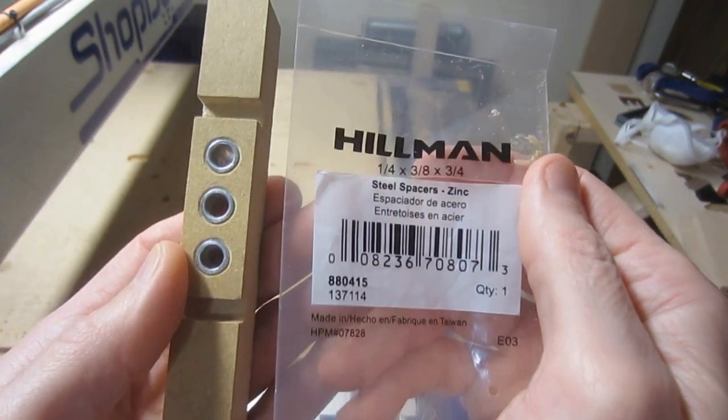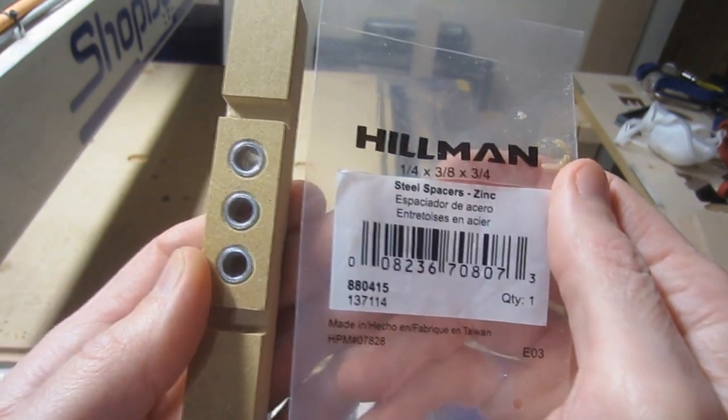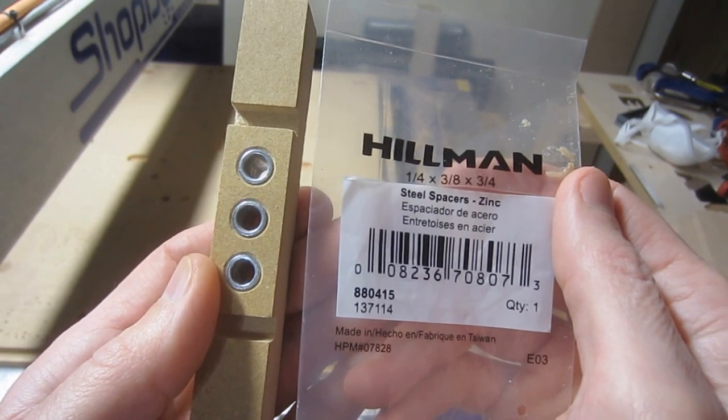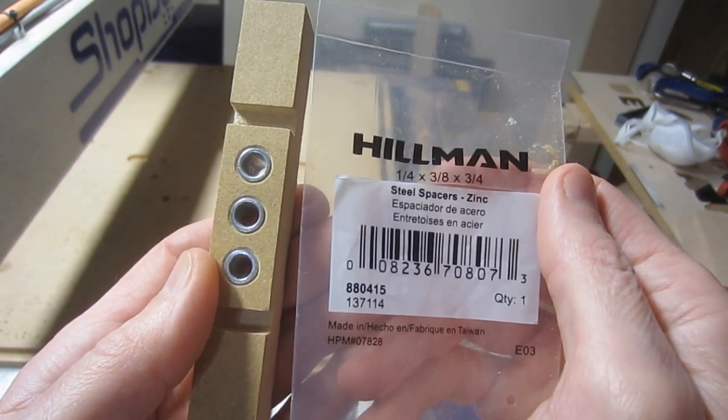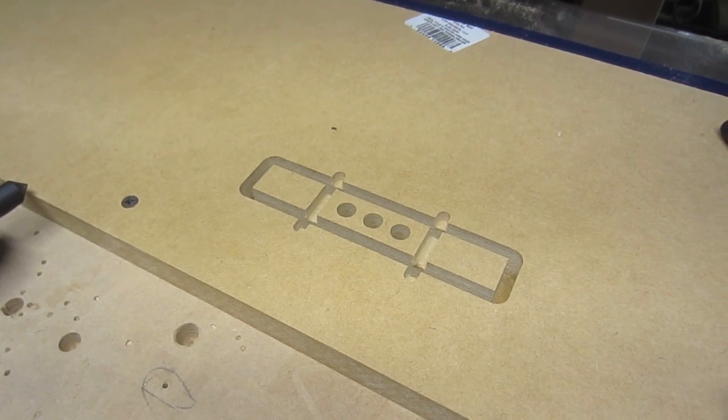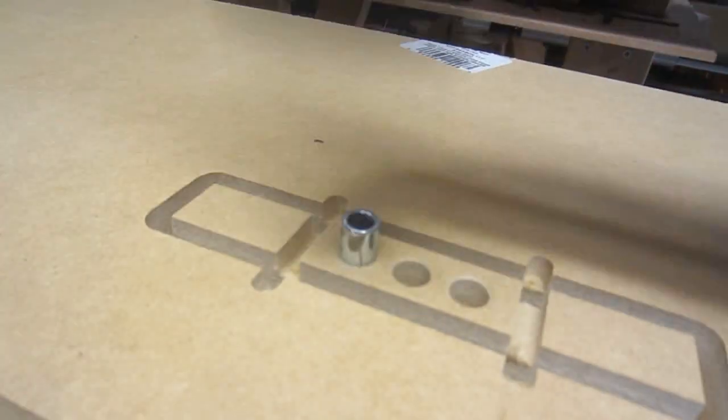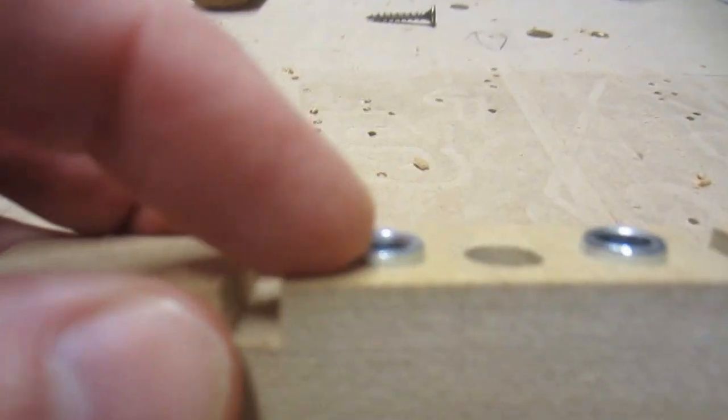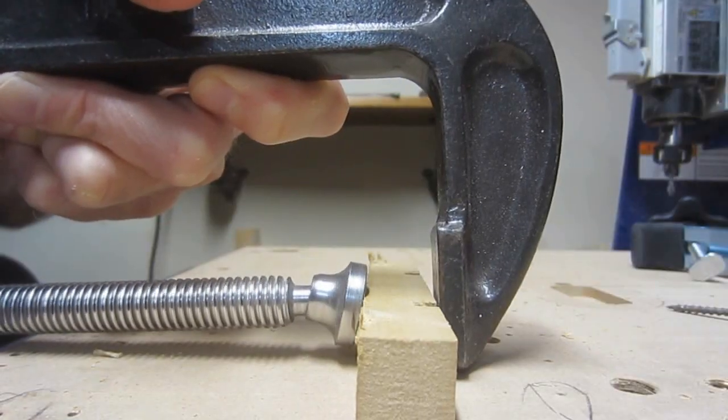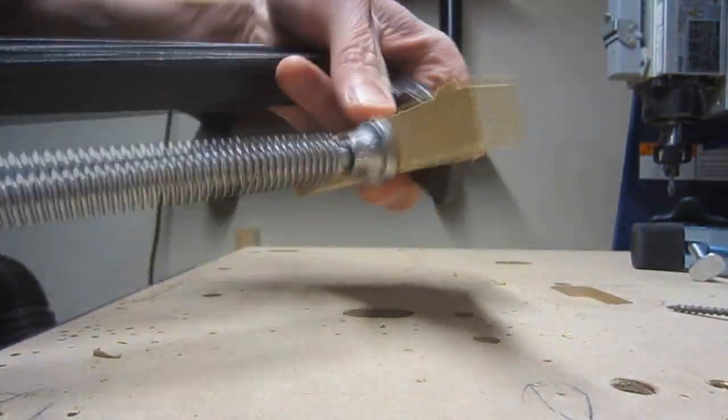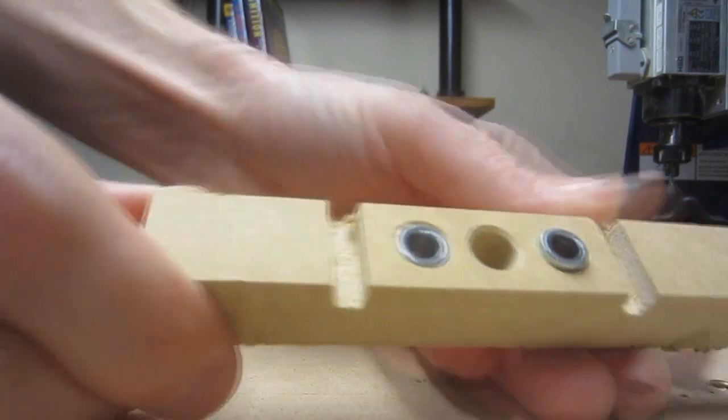While not absolutely essential, these help prevent the holes in the jig from becoming egged out by poorly aligned drilling, which could ultimately lead to inaccuracy. I typically begin the installation of the spacers while the jig is still on the router table. After putting a very light countersink on the holes, I tap the spacers with a rubber mallet. This almost never seats them perfectly, so I finish up by removing the jig and using a metal C-clamp to flush the spacers with the material.